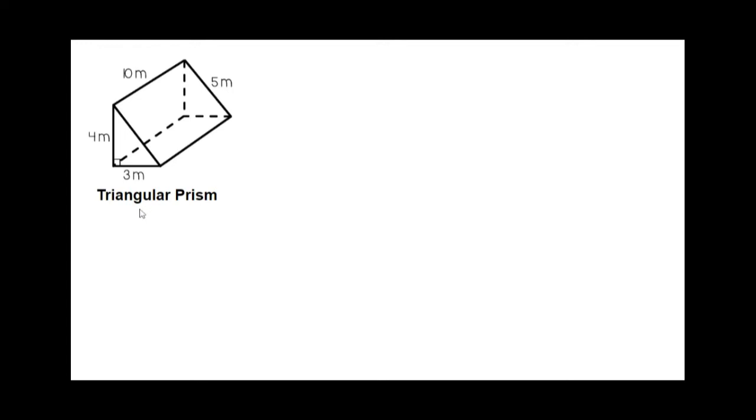We also have a triangular prism. Notice that the first word is triangle because it has a triangular base and prism because there are two identical bases separated by rectangles.